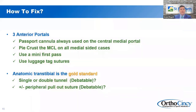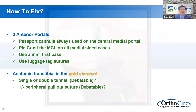How do we fix it? We typically use three anterior portals. We use a passport cannula in the middle for suture management and instrumentation. We perform pie-crusting on the MCL to give a little opening in the medial compartment. We use a mini first-pass device to pierce the meniscus, and we use luggage tag sutures, which have been shown to have improved pullout strength. We then perform an anatomic trans-tibial tunnel — usually a single tunnel, though some use double; there's no difference in outcomes.